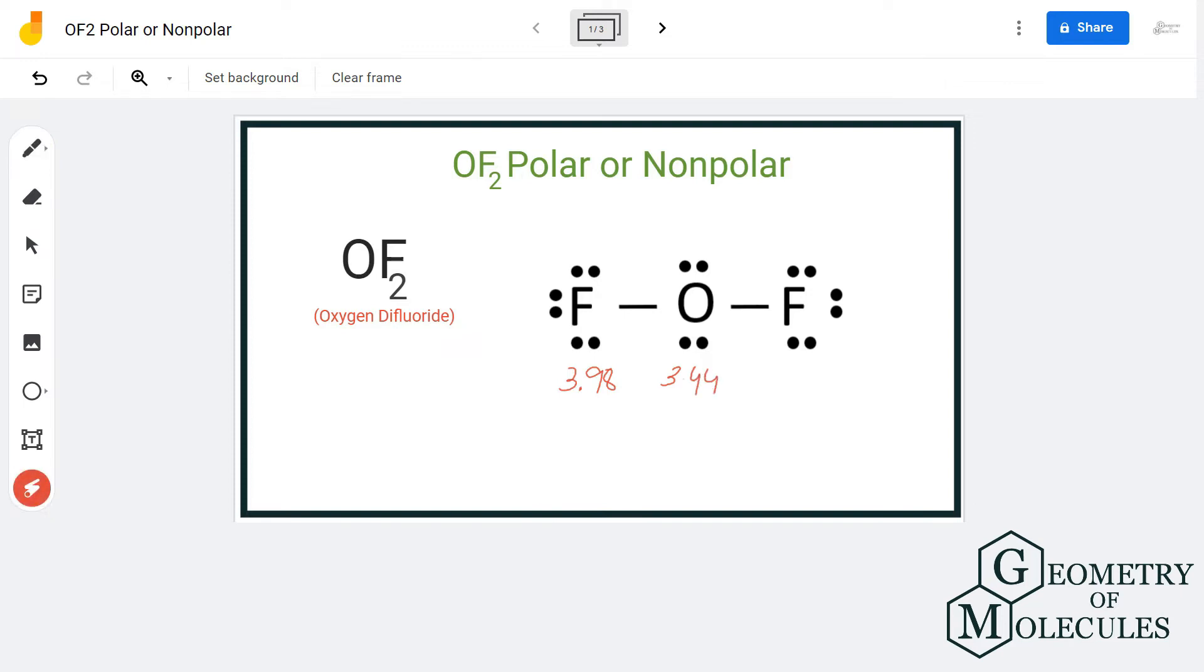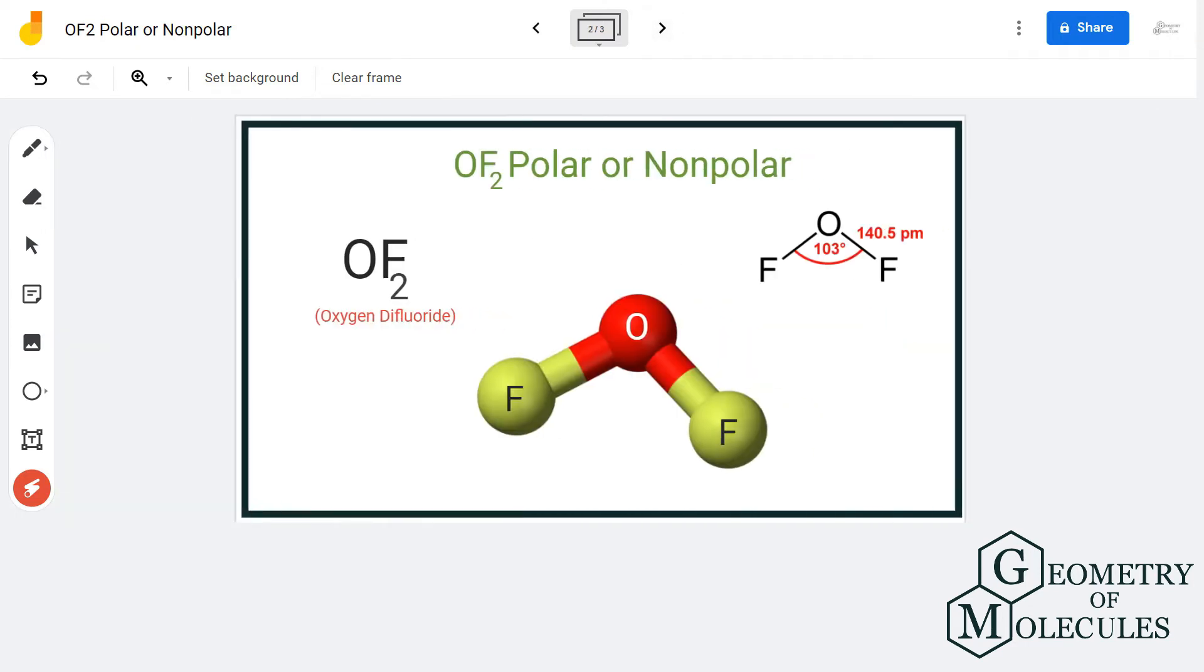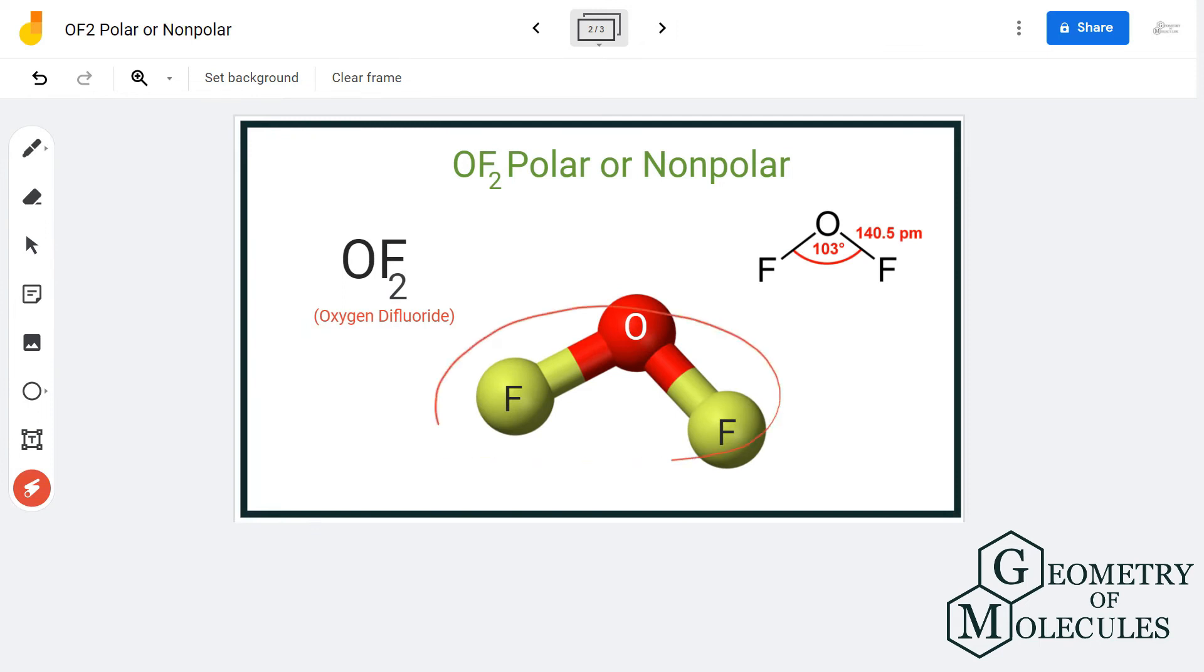Now you might wonder that the Lewis structure of this molecule suggests that the molecule is linear, but that is not the case. If you look at the shape here, you will see that these two lone pairs of electrons cause a bend in the shape, and the shape of the OF2 molecule is bent.